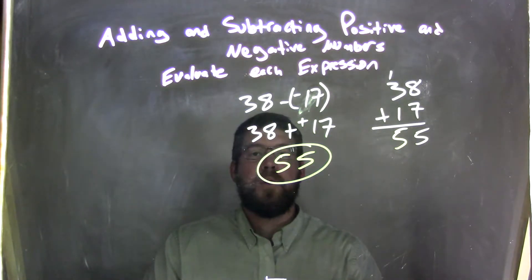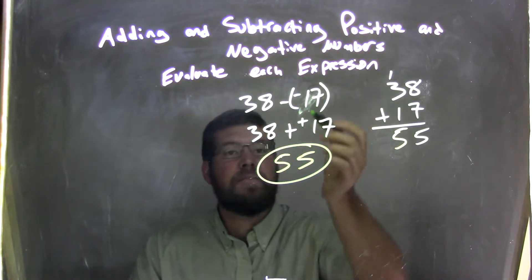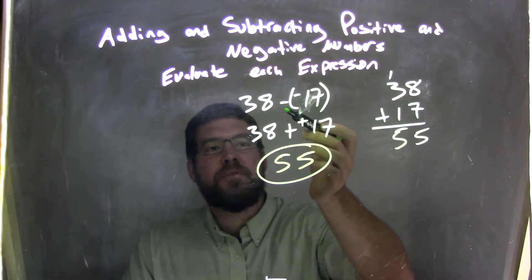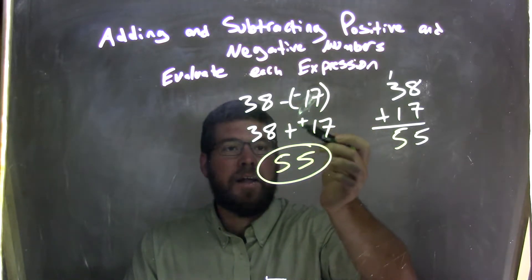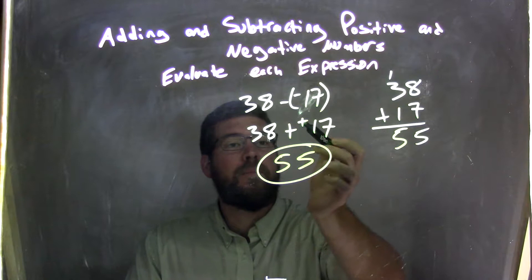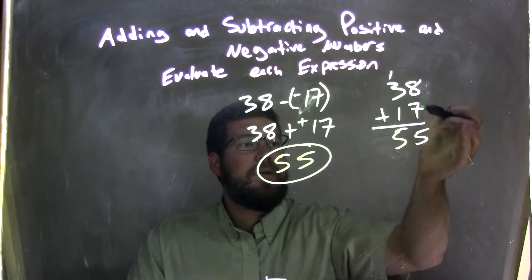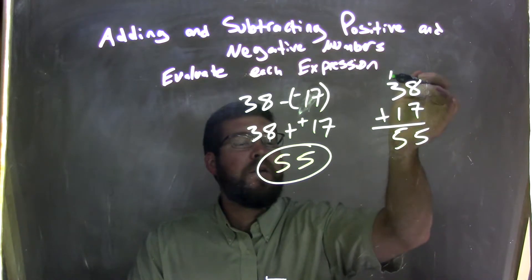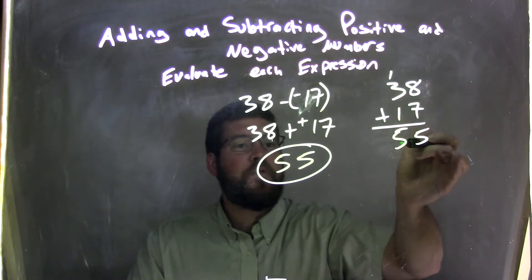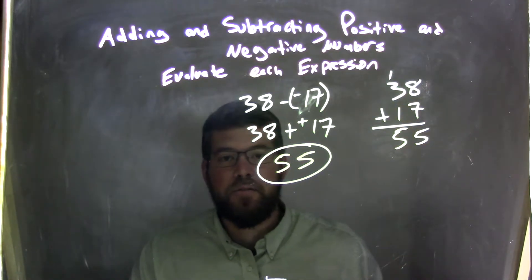So again, let's recap. We started with 38 minus a negative 17. We know that subtracting a negative is the same thing as adding a positive. So we have 38 plus a positive 17. 38 plus a positive 17. Write it out here. 8 plus 7 is 15. 5 carry the 1. 1 plus 3 plus 1 is 5. So 55 is my final answer.